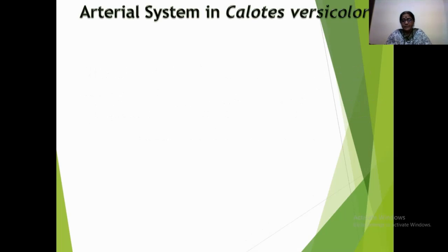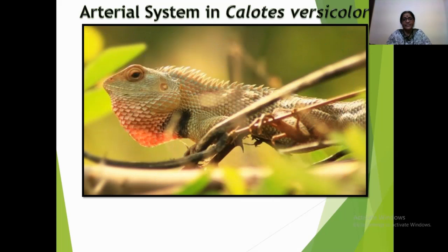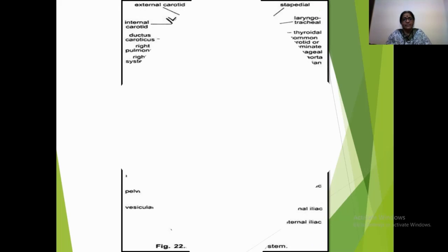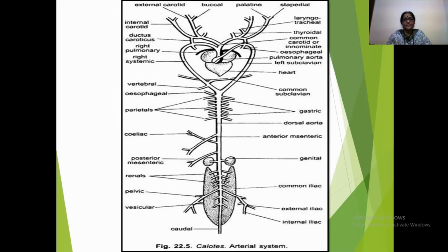The topic of today's discussion is the arterial system in Calotes versicolor. The arterial system is the system of blood vessels which distributes blood to different parts of the body of Calotes and other vertebrates. Here is the system and its different arteries and sub-arteries.